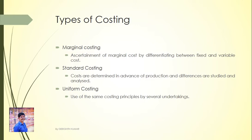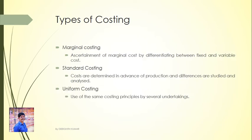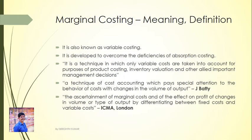So, the types of costing are: historical, direct, absorption, marginal, standard, and uniform costing. Now, our study is focused on marginal costing. Marginal costing is also known as variable costing.